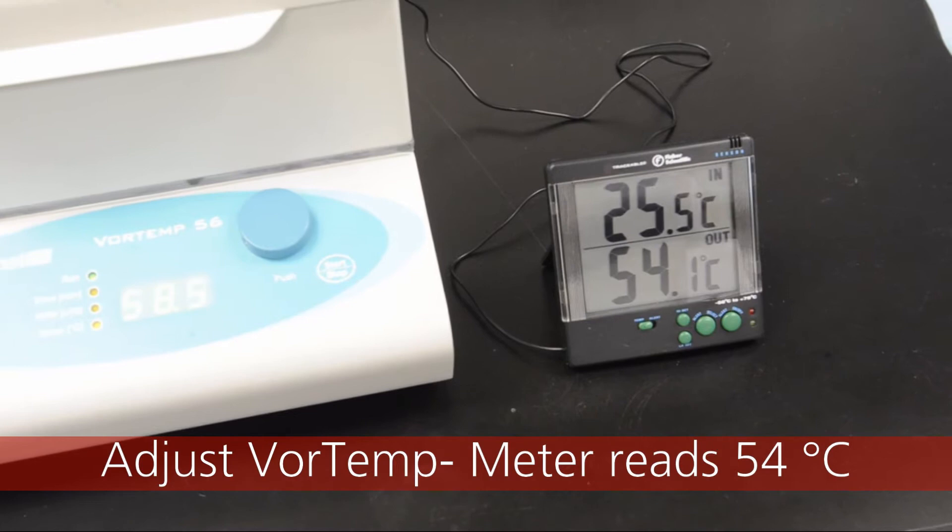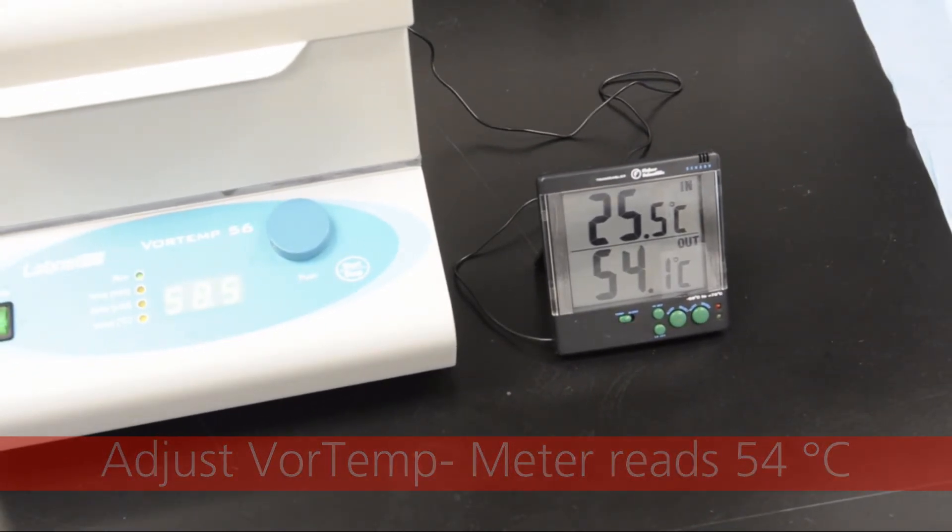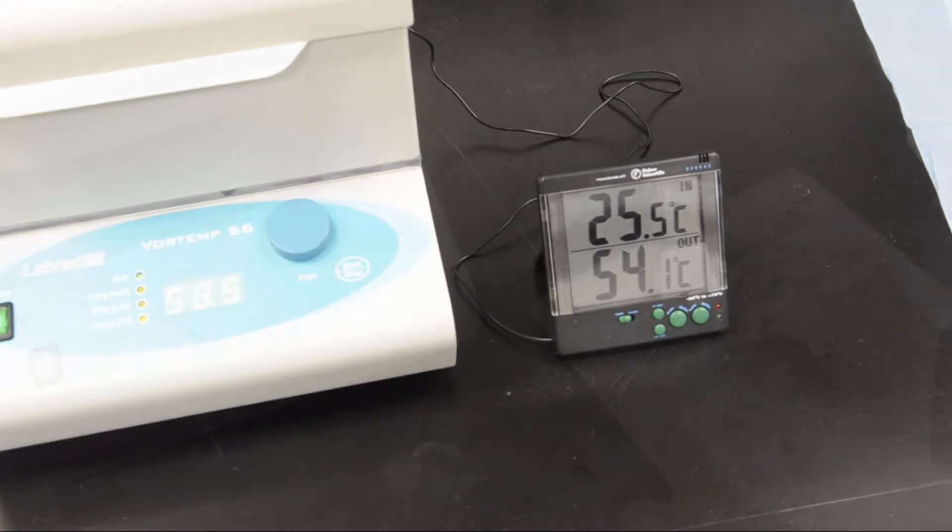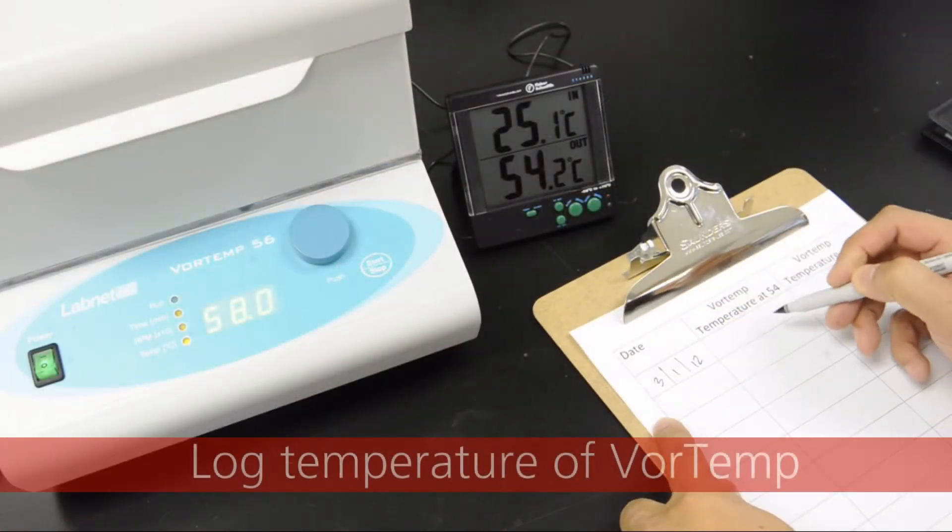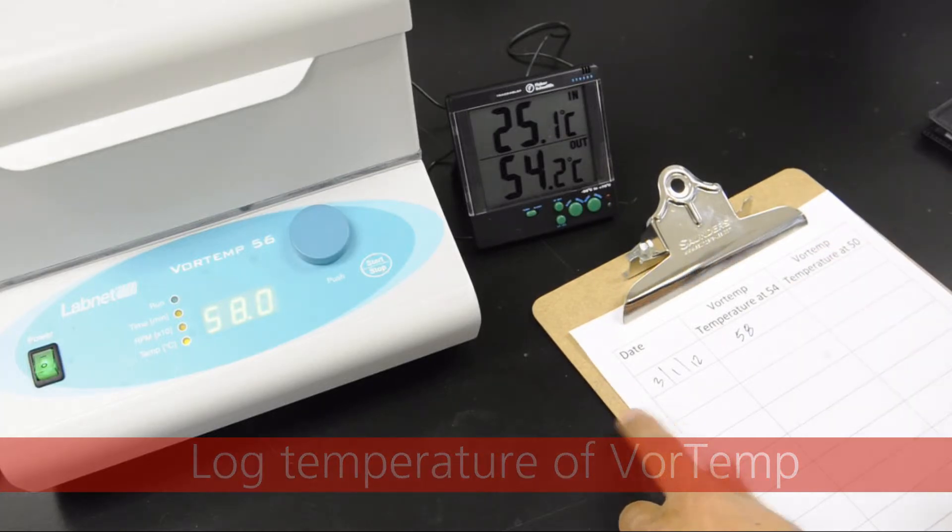adjust the Vortemp temperature until the reading on the digital temperature meter has reached 54 degrees C and the reading is stable. Once this has occurred, log the temperature displayed on the Vortemp and on the digital temperature meter.